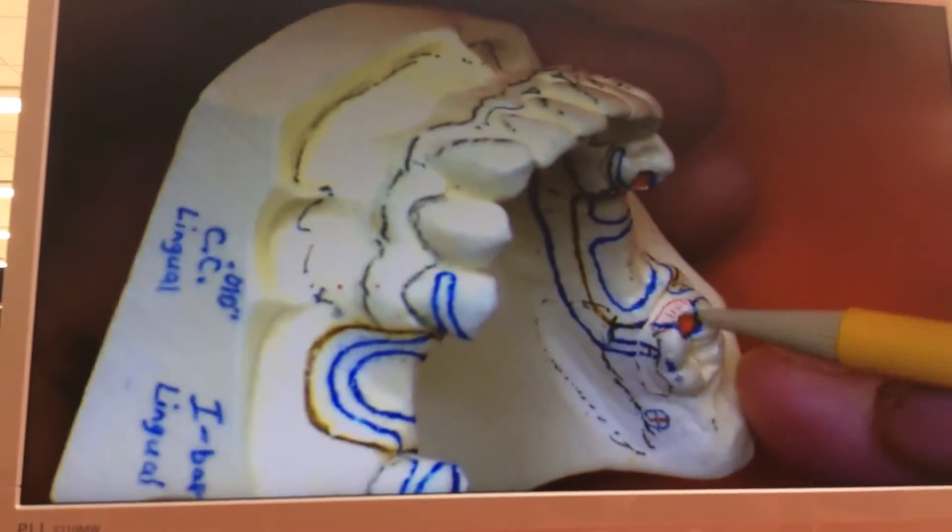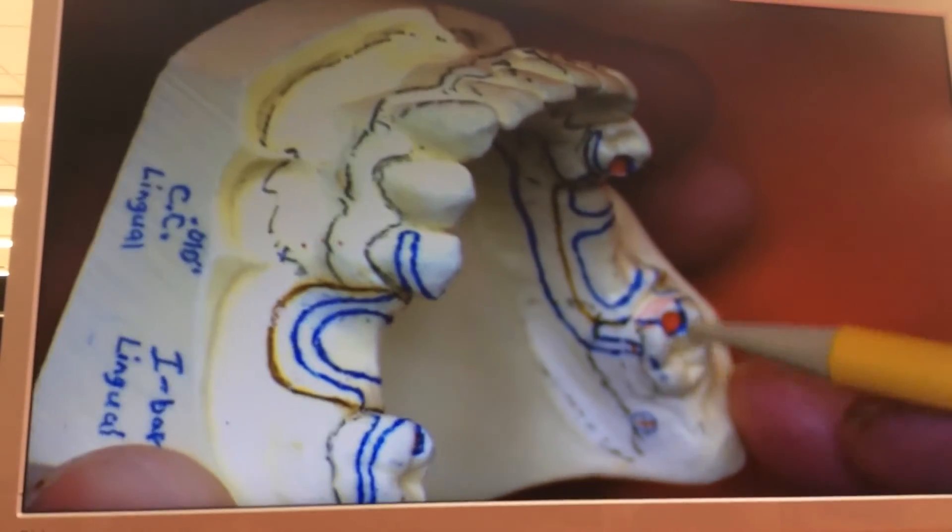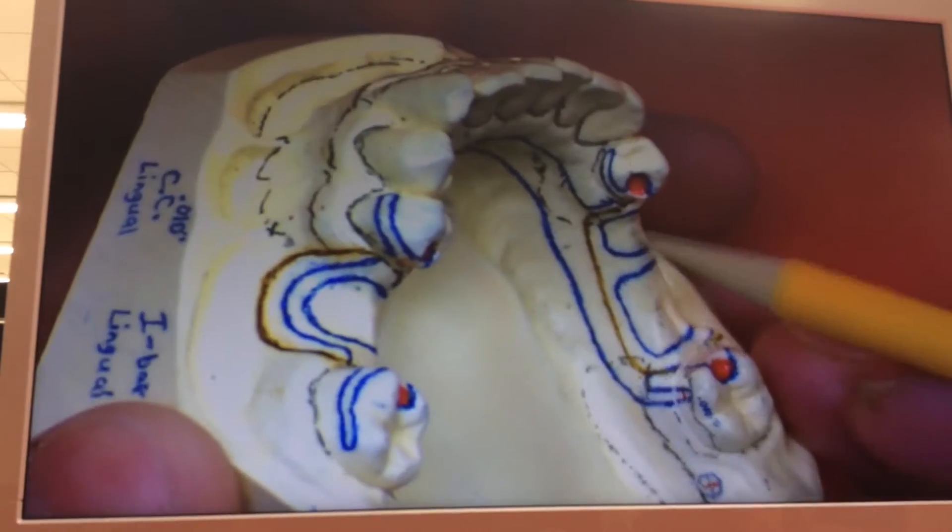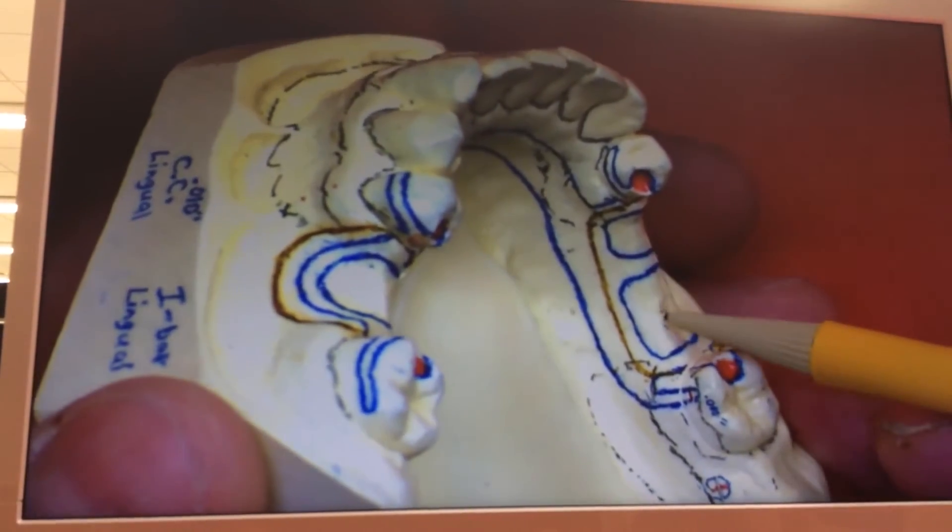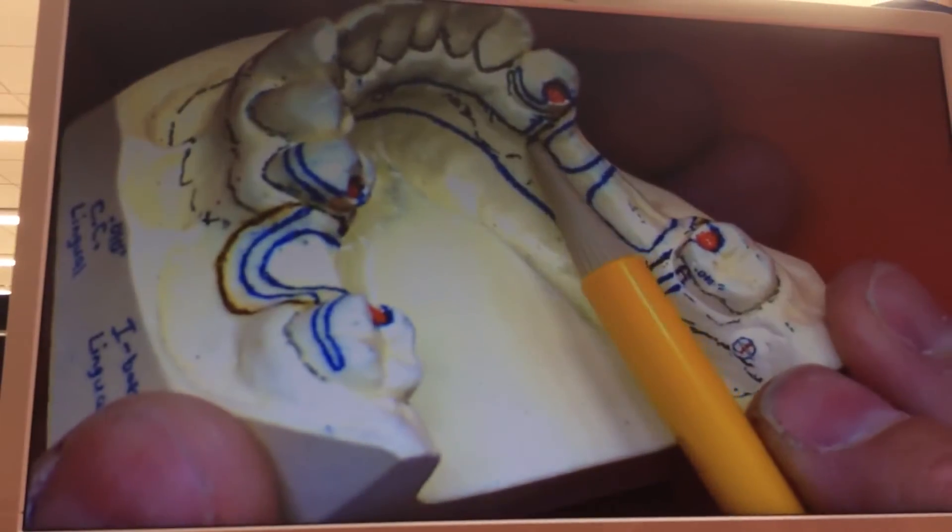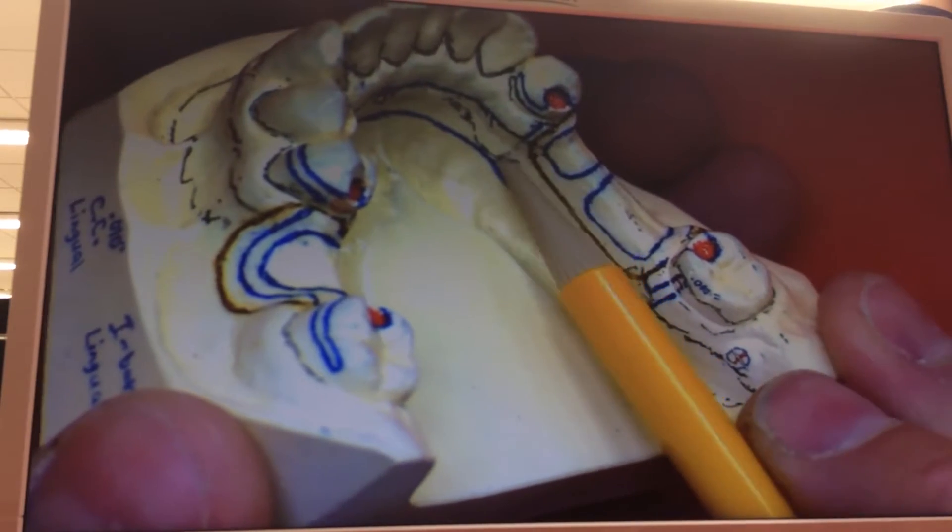This is a minor connector coming up to this clasp assembly. We've got a minor connector of the meshwork. If we take our acrylic and we cross the major connector right here, then everything back is a minor connector.